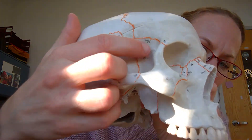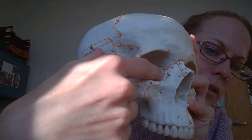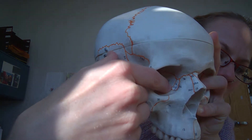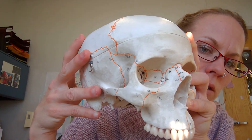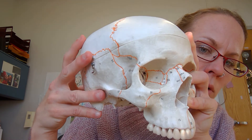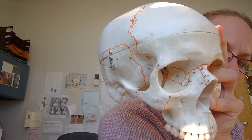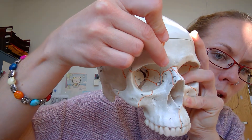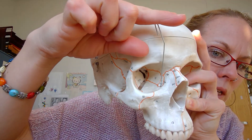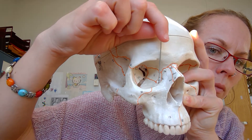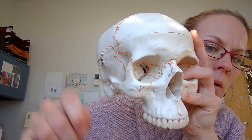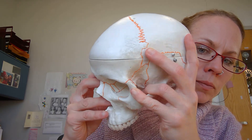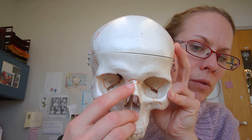Looking inside the eye orbit, on the medial side you can see the lacrimal bone. If I angle it just right, I can point to the nasolacrimal canal, which is part of the lacrimal bone — you can see it on both sides. You also have the nasal bone here.